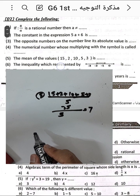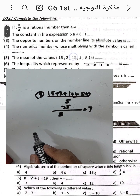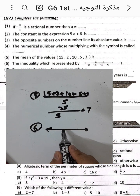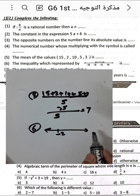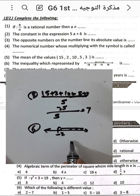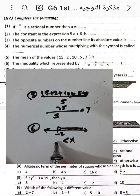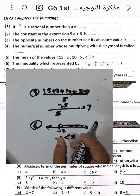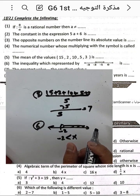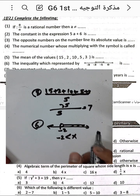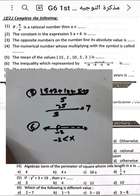Question number six: the inequality represented on the number line begins at negative 2 and goes to the right, open at negative 2. Since it is open at negative 2, that point is not included in the solution. The inequality represented is x greater than negative 2.